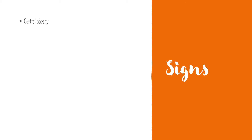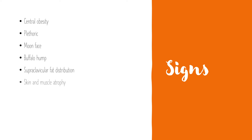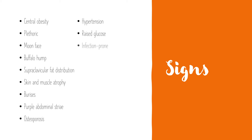A particularly rare symptom that does occur in females is virilisation. Whilst your patients will complain of symptoms, you might actually notice certain characteristics on examination that are really typical with Cushing's. Firstly, there's central obesity. They might be plethoric, have a moon face, or even a buffalo hump. You may notice some supraclavicular fat distribution, some skin or muscle atrophy. These patients may have bruises, or these really characteristic purple abdominal striae. They may have osteoporosis, raised blood pressure and glucose. Lastly, they might also be infection-prone, or you notice this poor healing of wounds.